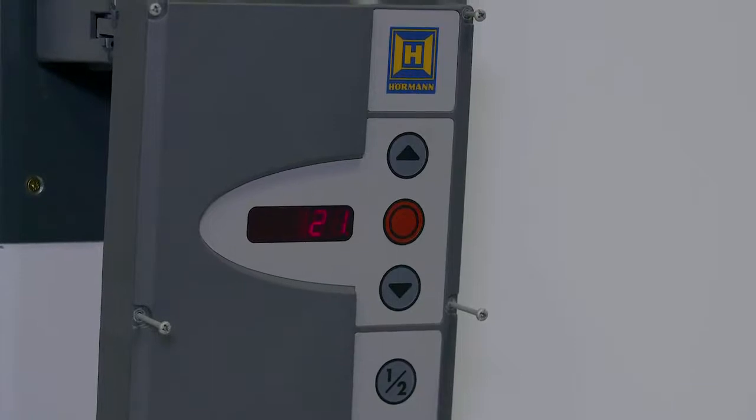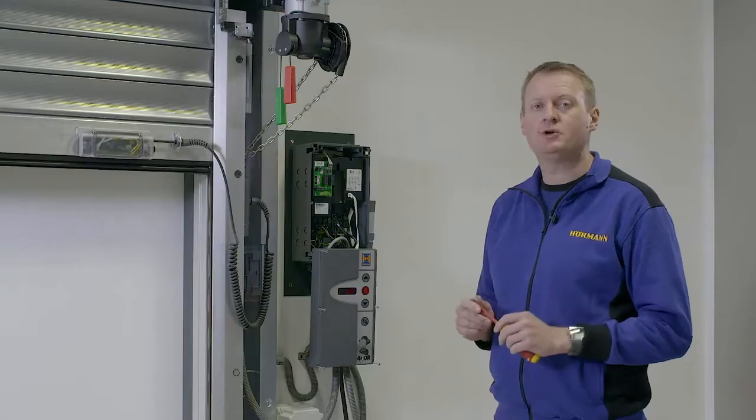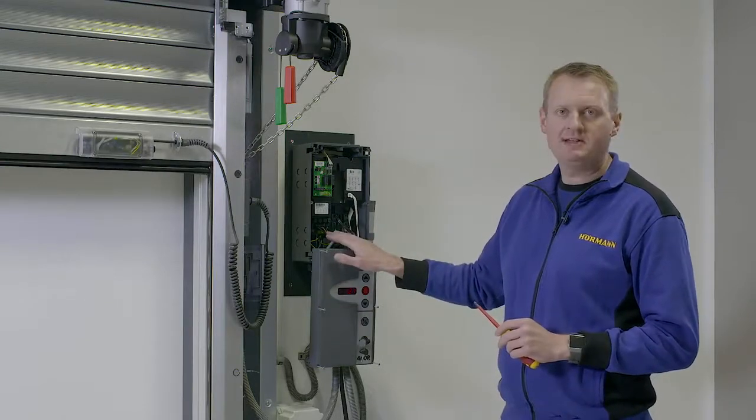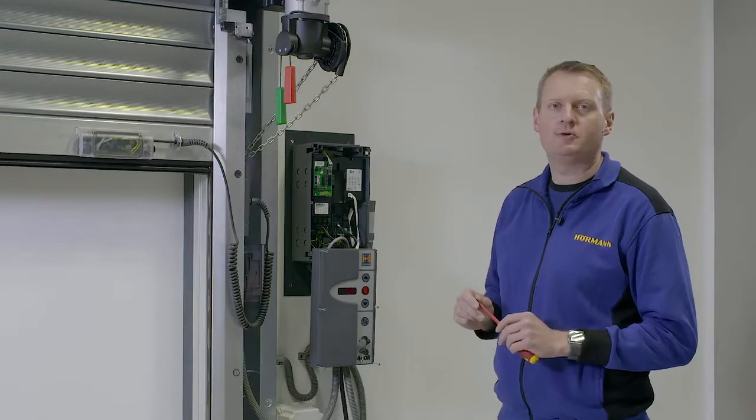Error code 21 says that the motor is physically blocked. This is usually caused by a missing phase. Please check the incoming phases and the 10 amp fuses on the control card.